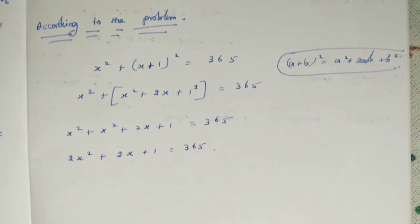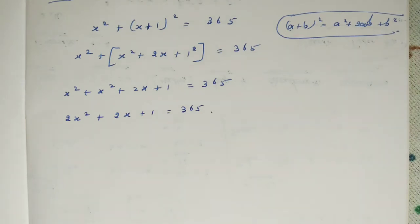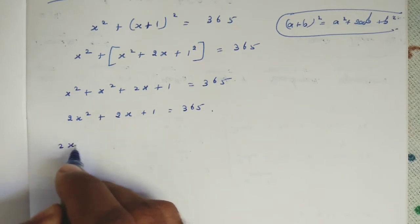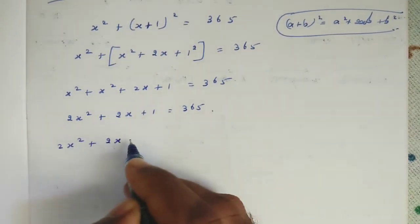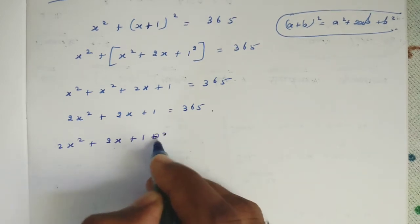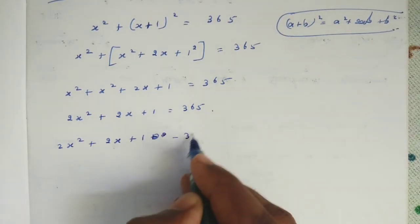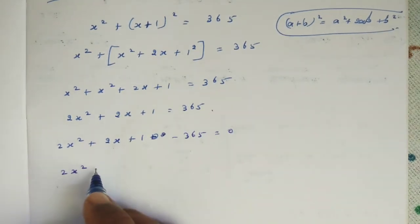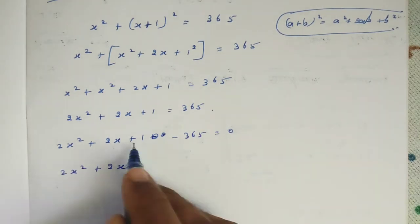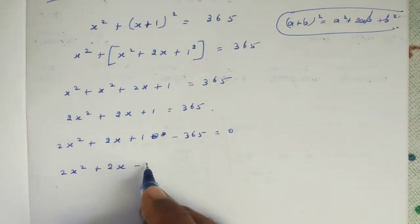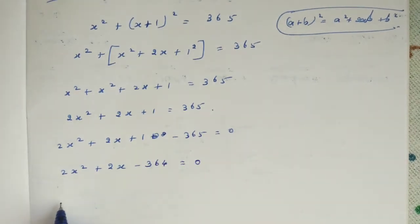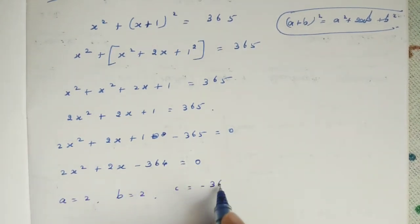Now we bring 365 to the left-hand side: 2X squared plus 2X plus 1 minus 365 equals 0. So 1 minus 365 gives minus 364, and we get: 2X squared plus 2X minus 364 equals 0. Now it is in standard form. We can identify A equals 2, B equals 2, C equals minus 364.